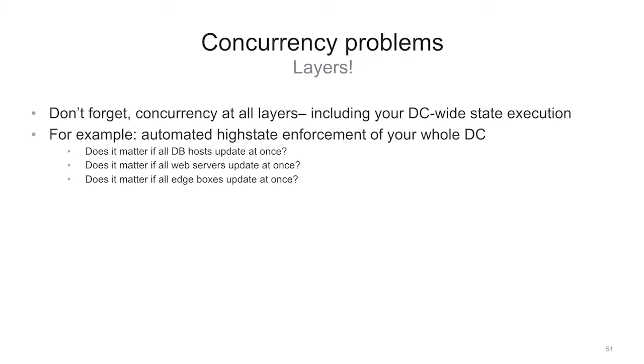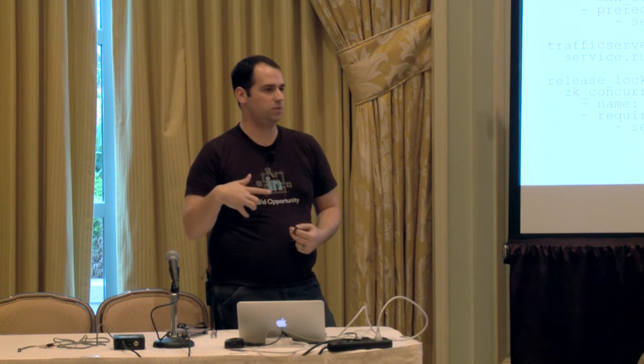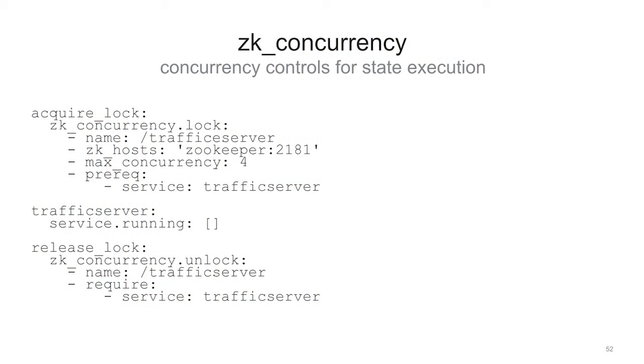A simple solution pushed in earlier this year was a ZooKeeper concurrency module for states. You can wrap a specific section of an SLS state run inside a lock — before restarting traffic server, make sure you have a lock, control how many get it, whether they're ephemeral, and release at the end. This does require ZooKeeper but you get the idea for writing it on top of whatever else you use. Concurrency is not just inside Salt — it's everywhere in your data center.